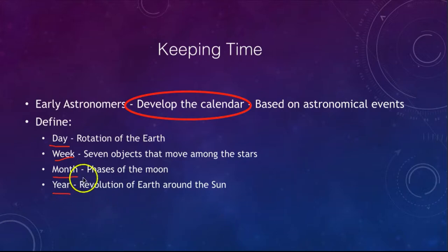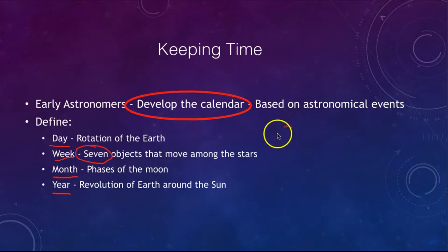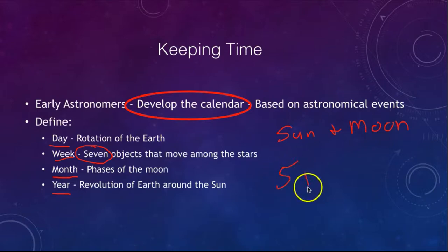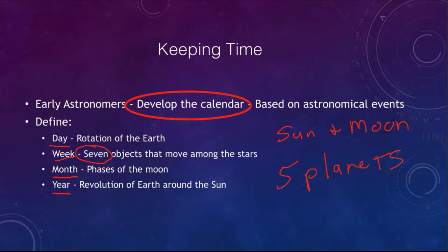The least obvious unit is the week. In astronomy, there are seven objects that move among the stars: the Sun, the Moon, and the five planets known to ancient astronomers. One day of the week is named for each of these objects — for example, Sunday and Monday, and each of the planets corresponds to one of the remaining days.